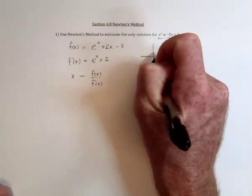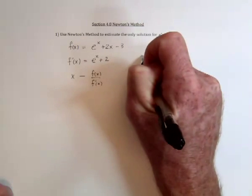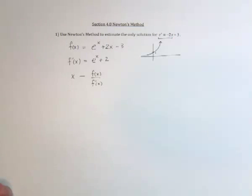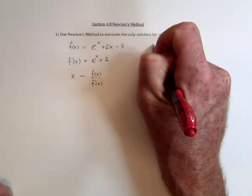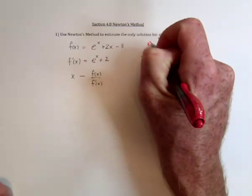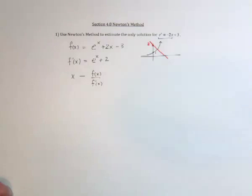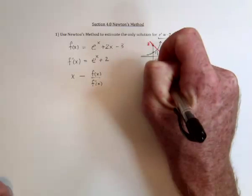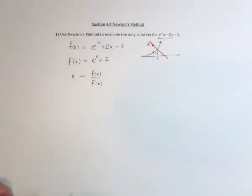So to get a guess, the graph of e^x goes exponentially. And then this crosses the y-axis right here at negative 3, and then it goes down at a slope of negative 2. So as my guess, I'm going to say x equals 1.